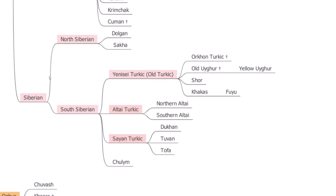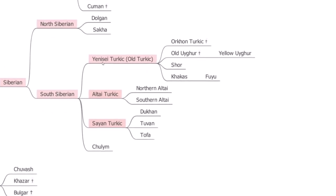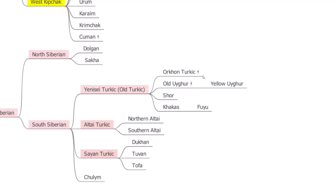We have the Siberian branch, which contains the oldest attested forms of Turkic languages. The oldest alphabets also belong to the Siberian branch, such as the Orkhon script and Old Uyghur script. In the Siberian branch we have North Siberian — the Tofalar and the Sakha, or Yakuts. We have the Sayan branch, starting with Old Turkic, spoken from the early 6th century to the 10th century, including the Orkhon Turkic of the Orkhon inscriptions and Old Uyghur.